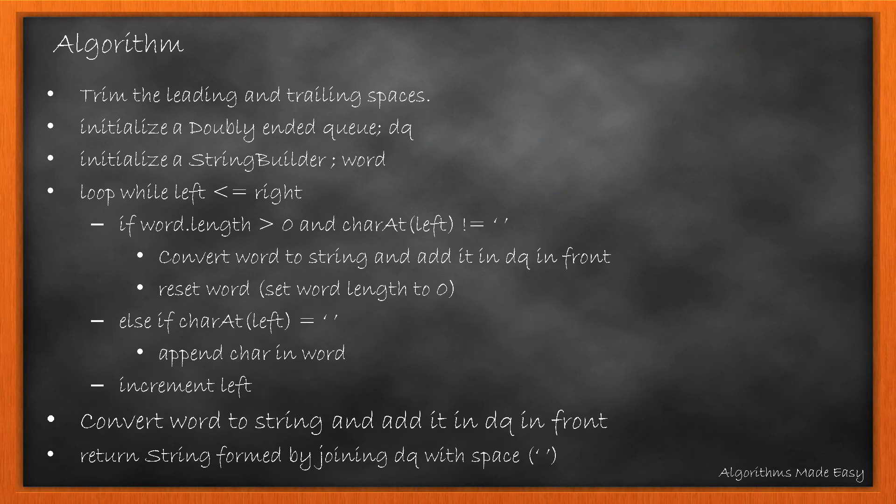Summarizing it in an algorithm, we first trim the leading and trailing spaces, then we initialize a doubly ended Q, DQ and a string builder, word. We loop while left is less than or equal to right. If the length of word is greater than zero and the character at left is not equal to the space character, we convert the word to string and add it in the DQ in front. We then reset the word length to zero.